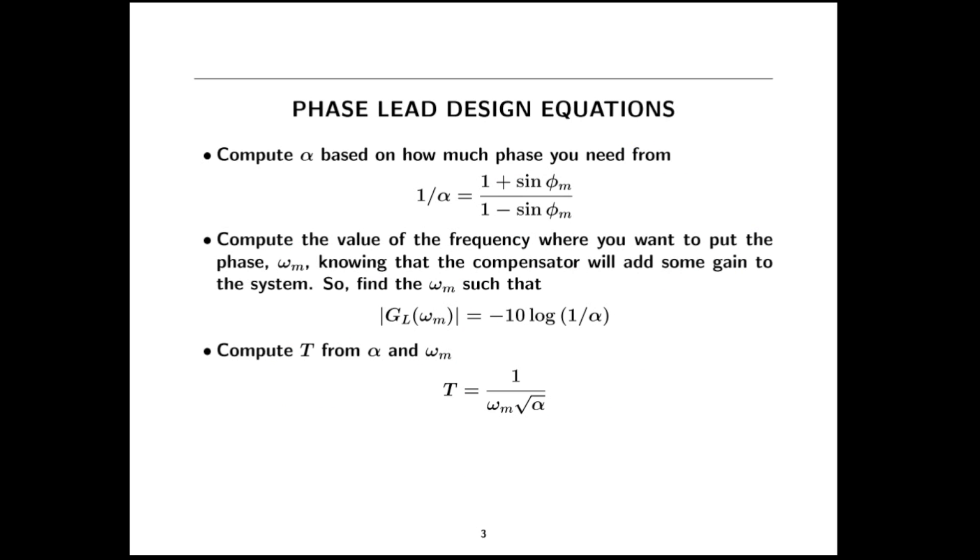So here's a summary of the design procedure. We'll compute alpha based on how much phase we need. Then we can compute the frequency where we want to put the phase, omega m, by knowing how much the magnitude plot is going to shift due to that value of alpha. Then we'll compute capital T. We can use KC to satisfy steady state error requirements that might be part of the design process.